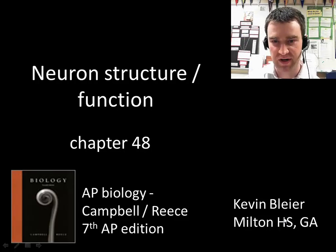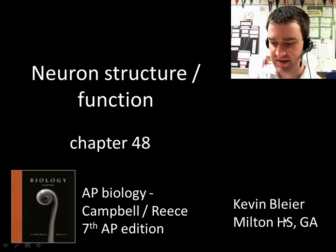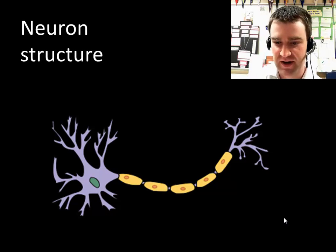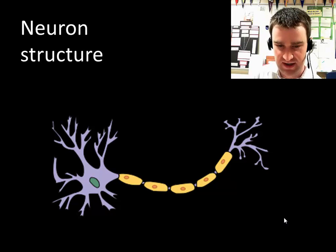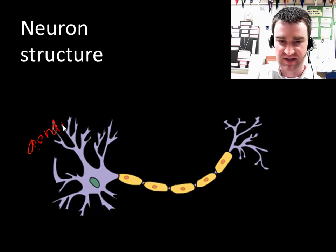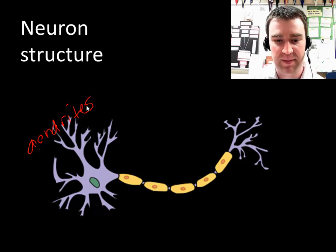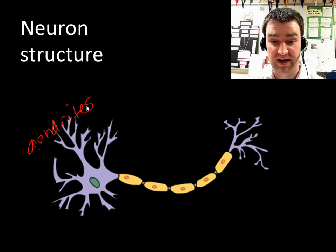Welcome to our discussion of how neurons send electrical signals from Chapter 48. We're going to first talk about how the neuron is set up structurally, some different parts of a neuron cell. There are going to be regions called the dendrites. Dendrites kind of look like little tree branches, that's why we call them that. Generally, the dendrites are going to be where signals are received by a neuron.